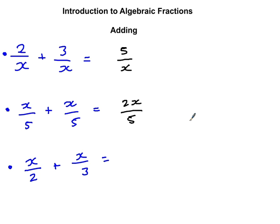The third one is slightly more difficult. I've got a 2 and a 3 on the bottom, so I need to think what is the number that 2 and 3 both go into, and they're both going to go into 6. How do I get from 2 to 6? I times that by 3, so times the top by 3. Now 3 times x is 3x.